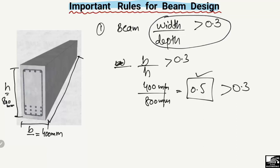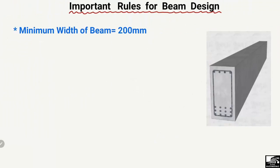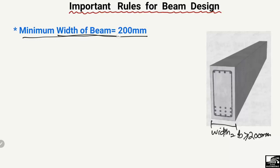The second rule is that the minimum width of the beam should be equal to 200 mm. You should not keep the width of the beam less than 200 mm. The beam width B should always be greater than or equal to 200 mm, but should not be less than 200 mm.